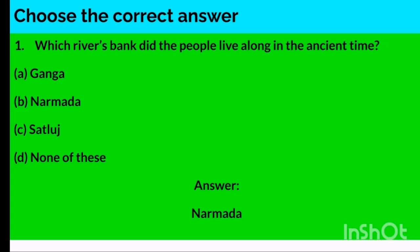Starting with 'Choose the Correct Answer.' Question one: On which river's bank did the people live in ancient times? Options are Ganga, Narmada, Satlaj, or None of these. The answer is Narmada — the people lived in ancient times on the banks of river Narmada.